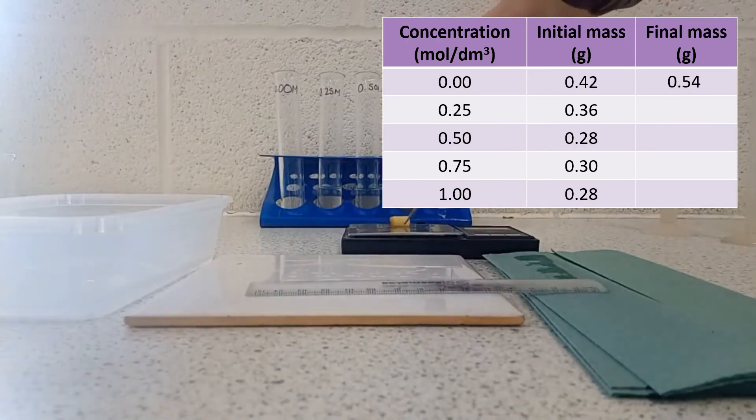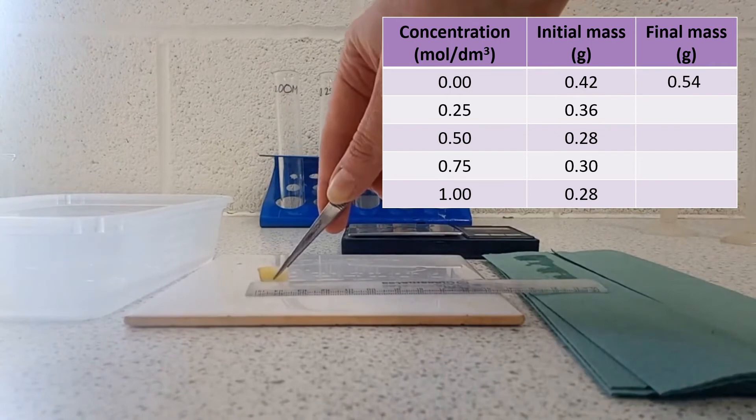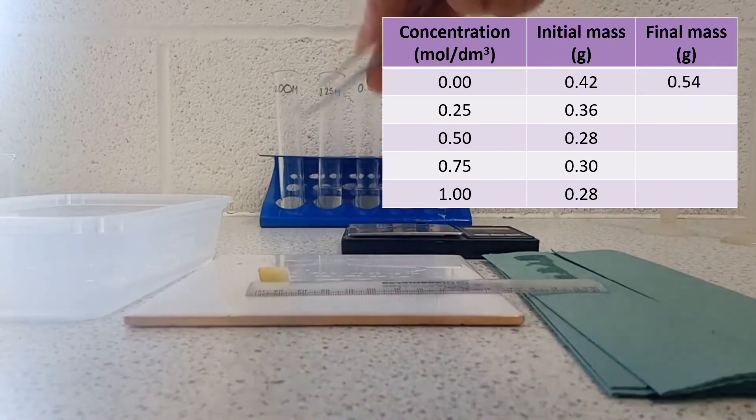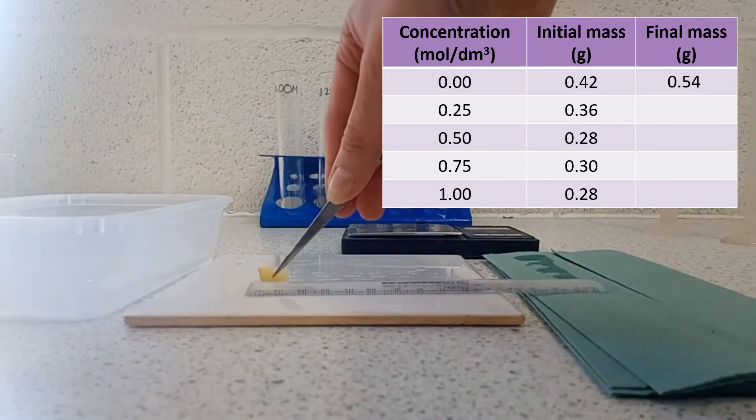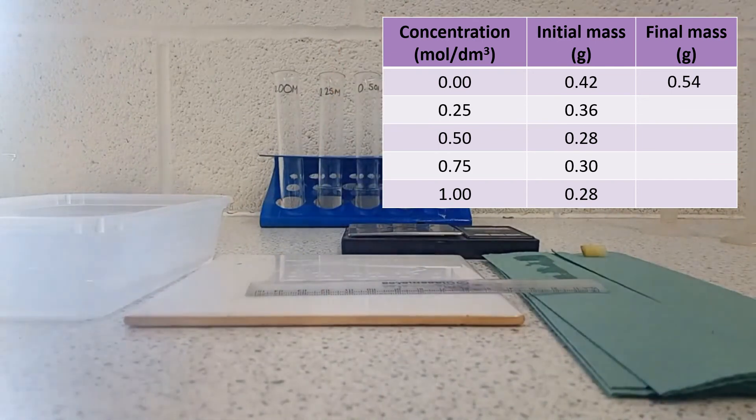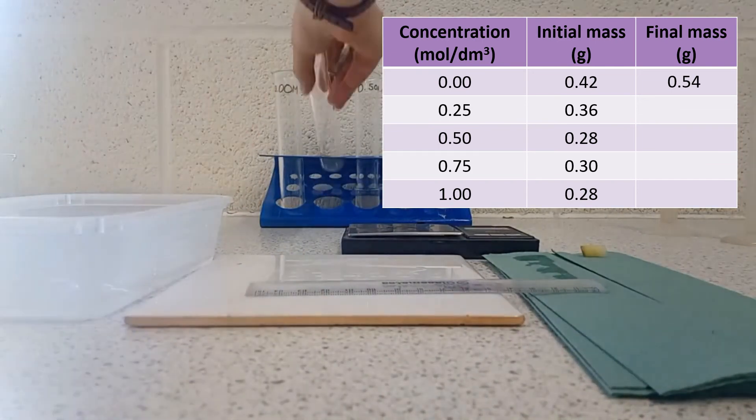Also, I can compare it to my ruler and see that this is no longer 10 millimeters long. It's more like 12 millimeters, so it's got a little bit longer, and that's what we would expect because the cells have swollen, and so the whole piece of potato has got a little bit larger.